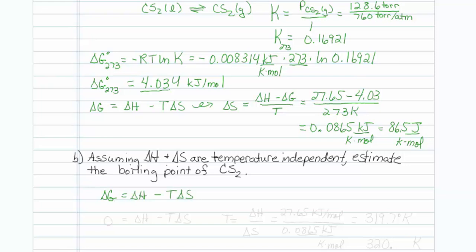Delta G should be equal to 0 at the boiling point. So that leaves us with delta H minus T delta S. To find our boiling point, the temperature is actually equal to delta H divided by delta S.